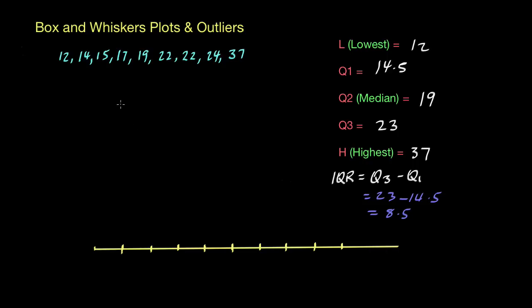The next step is to have a look at two different formulas which tell you whether or not any of these numbers are outliers. So this formula here is saying take the value of Q1, which we have over here which is 14.5, and subtract 1.5 multiplied by the IQR. So you take 14.5 and subtract 12.75.